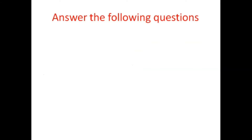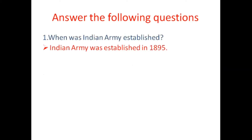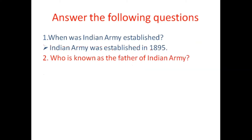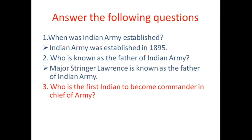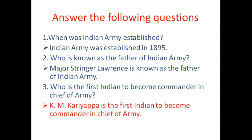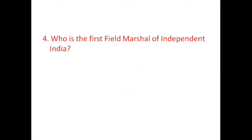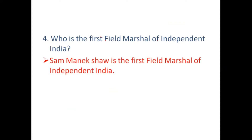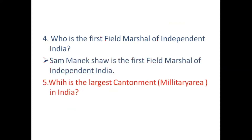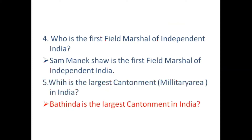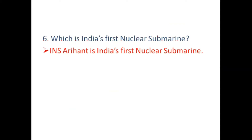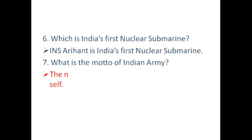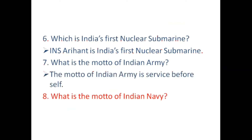Now let us see the following questions. When was the Indian Army established? The Indian Army was established in 1895. Who is known as the Father of the Indian Army? Major Stringer Lawrence. Who was the first Indian to become Commander-in-Chief of the Indian Army? Who was the first Field Marshal of independent India? Sam Manekshaw. Which is the largest cantonment in India? Babina. Which is India's first nuclear submarine? INS Arihant. What is the motto of the Indian Army? Service Before Self.